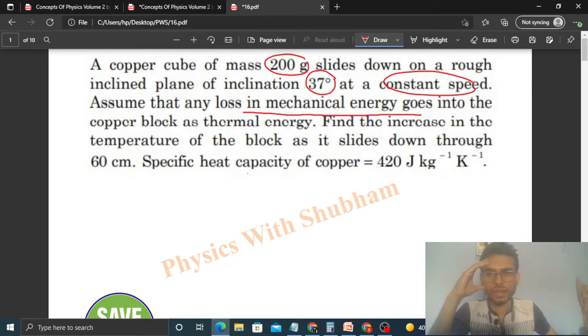Assume that any loss in mechanical energy goes into the copper block as thermal energy. Find the increase in the temperature of the block as it slides down through 60 centimeters. Specific heat capacity of copper is given.